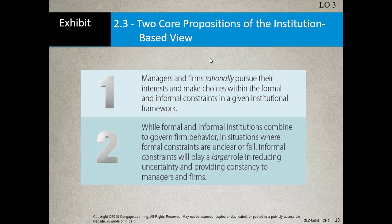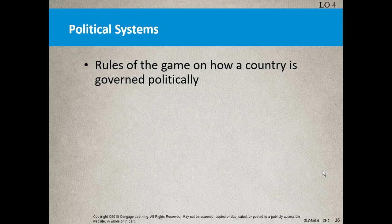The two core propositions of the institution-based view: number one, managers and firms rationally pursue their interests and make choices within formal and informal constraints in a given institutional framework. Number two, while formal and informal institutions combine to govern firm behavior, in situations where formal constraints are unclear or fail, informal constraints will play a larger role in reducing uncertainty and provide constancy to managers and firms.